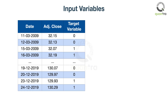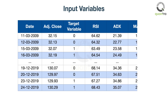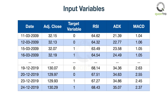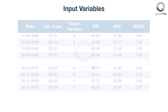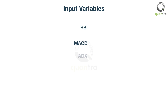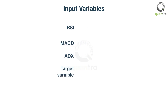But what does he use to try to predict the target variable? He uses indicators like RSI, MACD, and even momentum indicators such as ADX. These are the inputs to the machine learning algorithm, or feature variables.